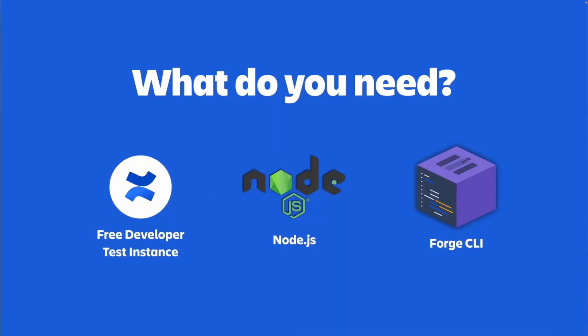So what exactly do you need to start building apps on the Atlassian cloud platform? Just three things: a free Atlassian developer instance, Node.js installed on your machine, and the Forge CLI.